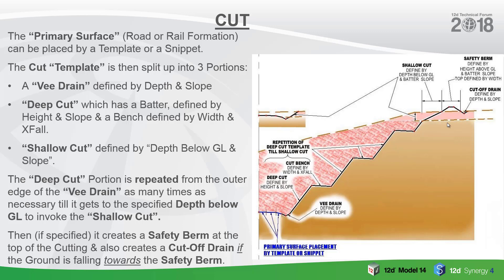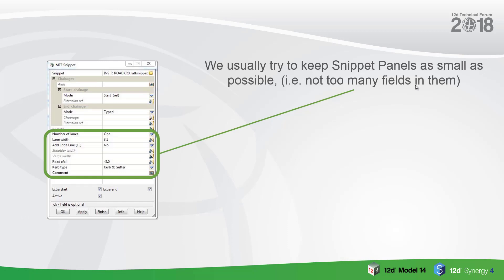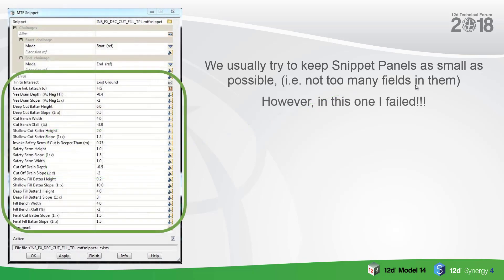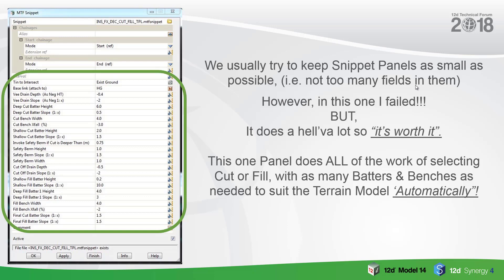Then the last thing it does is produce a cutoff drain if the ground is falling towards the berm. Now, usually when we're making a snippet, we try to keep the snippet panels as small as possible so that they're easy to use and there are not too many fields in them. However, in this one I've failed — I had a lot of stuff to put into it. But it does have a lot going on inside it, so it's worth it. This one panel does all of the work of selecting cut and fill with as many batters and benches as needed to suit the terrain model automatically.